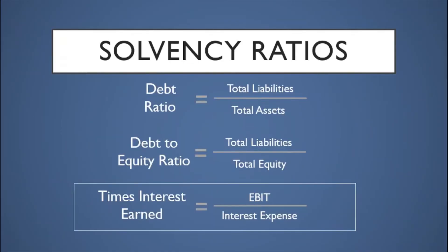We now proceed to the third solvency ratio: the times interest earned (TIE) ratio, calculated as earnings before interest and taxes (EBIT) divided by interest expense. The TIE ratio measures how many times earnings from operations can cover the interest expense. Obviously, the higher the TIE ratio, the better it is for the company.